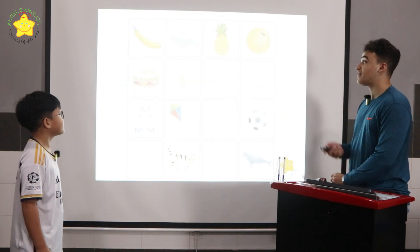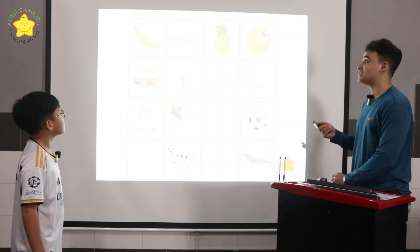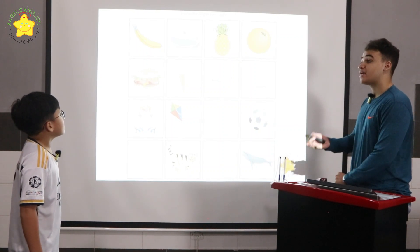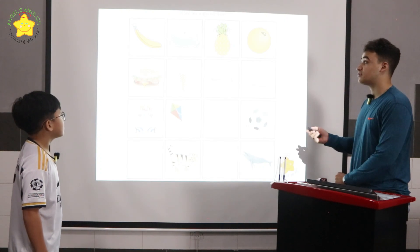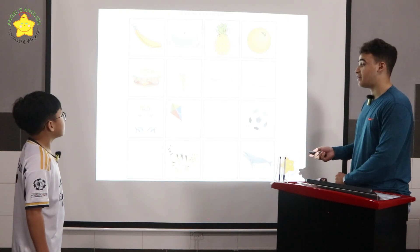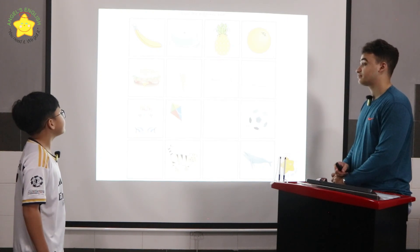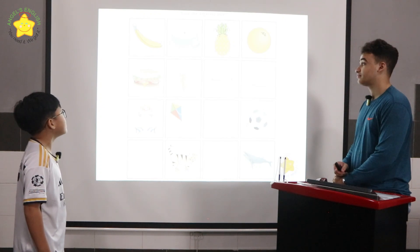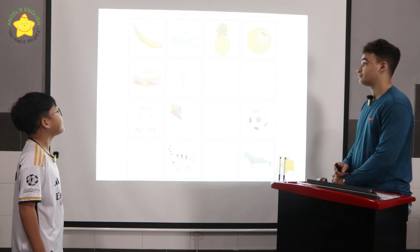Now, this is called find the different ones. In row one, the cake is different because the banana, the pineapple and the orange are all fruits. Can you please tell me which ones are different in rows two, three and four? In row two, the ice cream is different because the burger, the meat and chicken are foods.